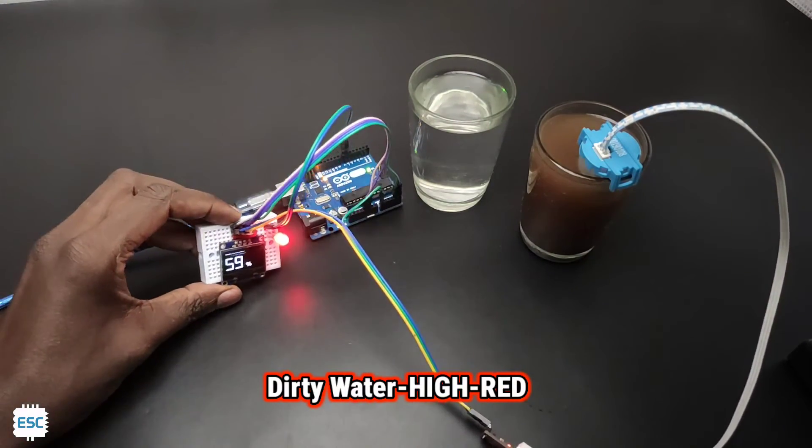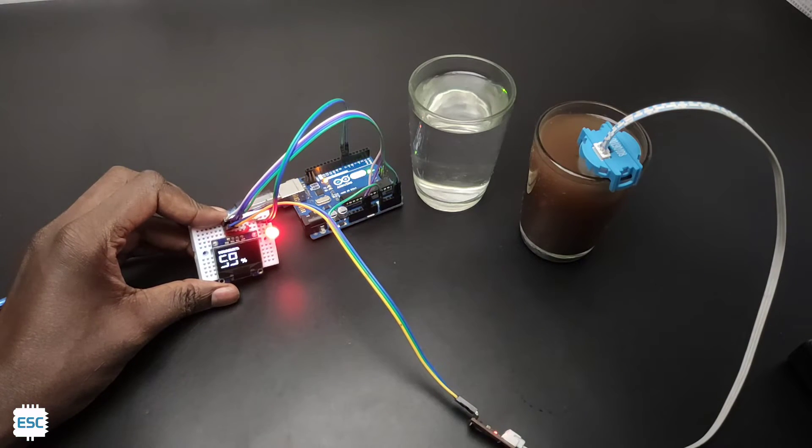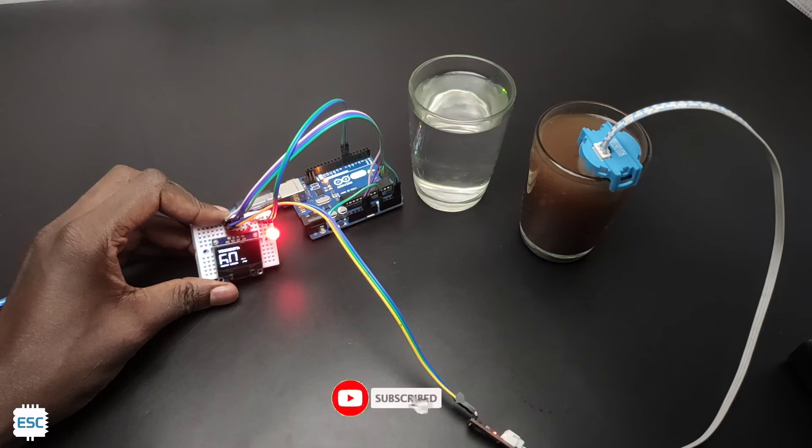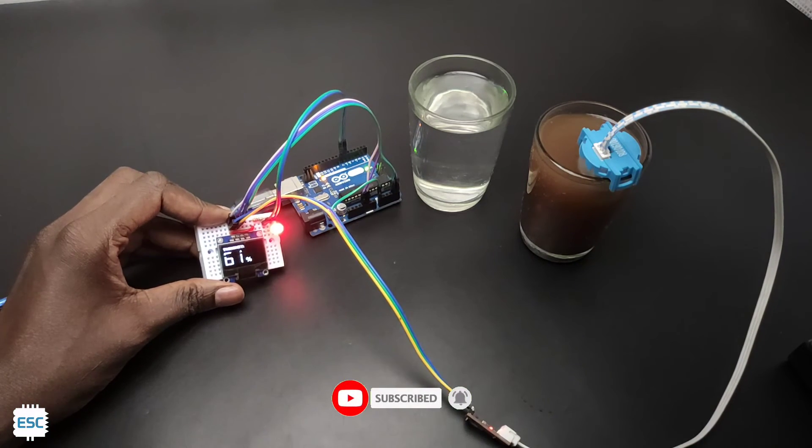So this is how I made a turbidity meter using Arduino and turbidity module. Hope you enjoyed and learned something new from my video. If so, please like, share and subscribe. Thanks for watching. I will see you next time.